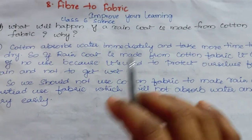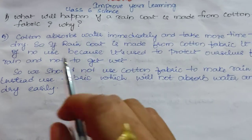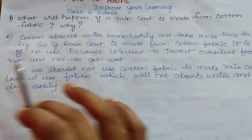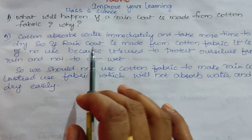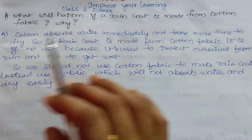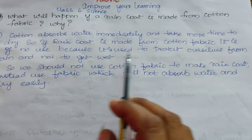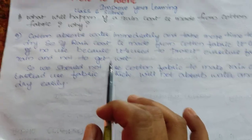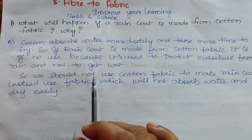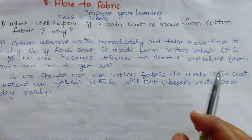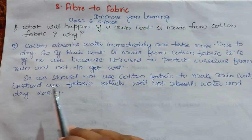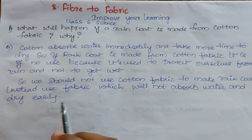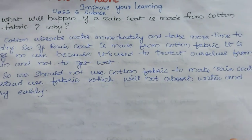When the raincoat is made with cotton fabric, cotton absorbs water immediately and takes more time to dry. So if a raincoat is made from cotton fabric, it is of no use because it is used to protect ourselves from rain. We should not use cotton fabric to make a raincoat; instead, we use fabric which will not absorb water and dries easily.